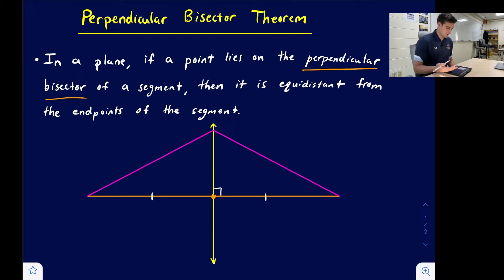So what the theorem tells us is if a point is on this segment - let's say this point up here at the top we'll call it point A - then if it's on this perpendicular bisector, it is equidistant from the endpoints of the segment. So if we put an endpoint here and an endpoint here, call this B and C, then these two segments AB and AC are also congruent. They have the same measure.